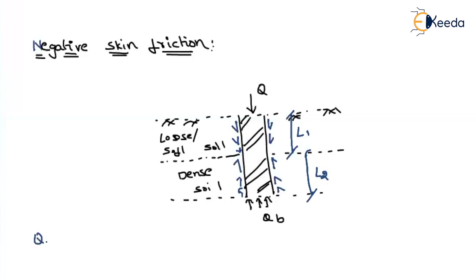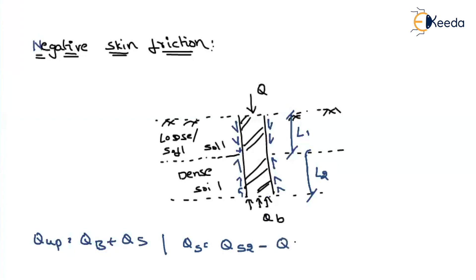The ultimate capacity of a pile will be equal to qp plus qs. There will not be any change in the end bearing resistance. The qs over length l2 is the resisting frictional force. But for the portion of l1, we have to subtract it, because the frictional resistance is acting in the direction of the applied force.